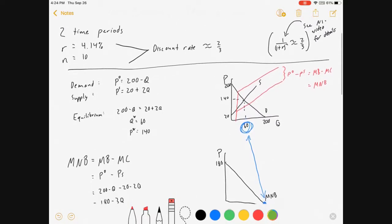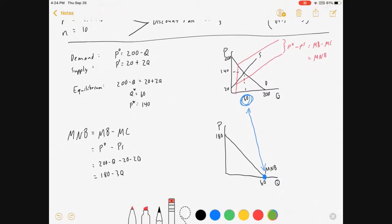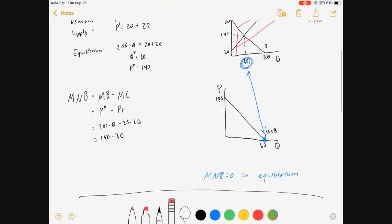You can ignore everything above that line. That's just sort of built in. But I derive the marginal net benefits by subtracting the supply curve from the demand curve.